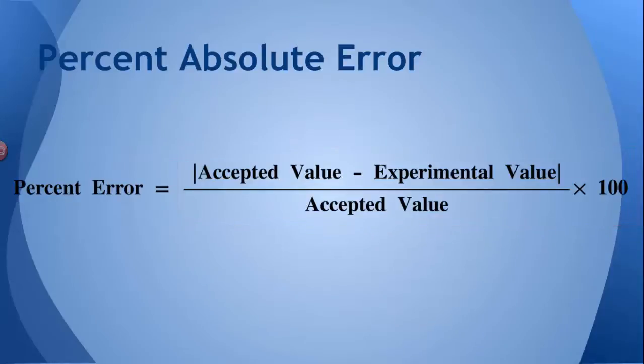You're going to take the absolute value of the difference between the right answer, the accepted value, and your answer, the experimental value. The absolute value signs means that you'll always have a positive number here, because there's no such thing as a negative percent. So you want to get rid of the negative sign. You take that difference and you divide it by the right answer again. And what that gives you then is the percentage of that right answer that you were wrong. You multiply by 100 to get it into percent, and obviously you want your percent error to be fairly low. The lower it is, the closer your experimental value is to the accepted value.